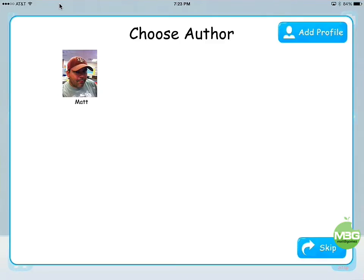One of the neat features about Tell About This is that you can add user profiles, so each kid could have their own profile. A really neat feature they added is that you can set up each student to have their own default email address that their finished products go to. What I like to do is set up the kids' parents' emails, so when they finish and publish it, their parents get an email — it gives the kids an audience.